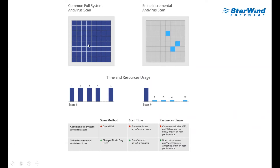To summarize the antivirus capability: with a common full-system antivirus scan, each scan takes the same amount of time every time. With 5nine's incremental antivirus scan, your first scan might take one hour, but subsequent scans take seconds — and that applies to all virtual machines simultaneously.